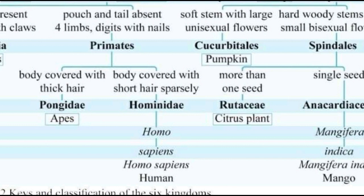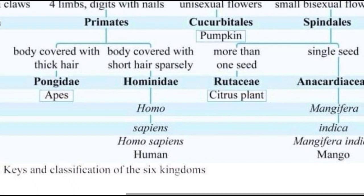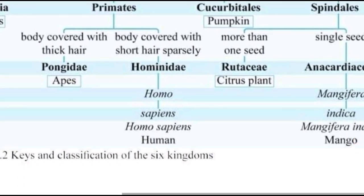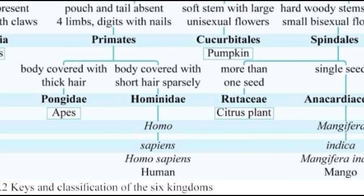Nomenclature — the name is given. Plants and animals have a scientific name. The genus is Mangifera, species is indica. The scientific name — Mangifera indica.